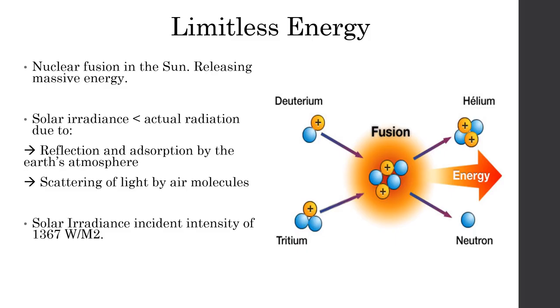The source of solar energy, of course, comes from nuclear fusion of hydrogen atoms in the sun releasing massive amounts of energy. Solar irradiance, which is the energy at Earth, is less than the actual radiation of energy from the sun. This is due to reflection and absorption by the Earth's atmosphere and scattering of light by air molecules. However, solar irradiance is still very intense at 1367 watts per meter square.